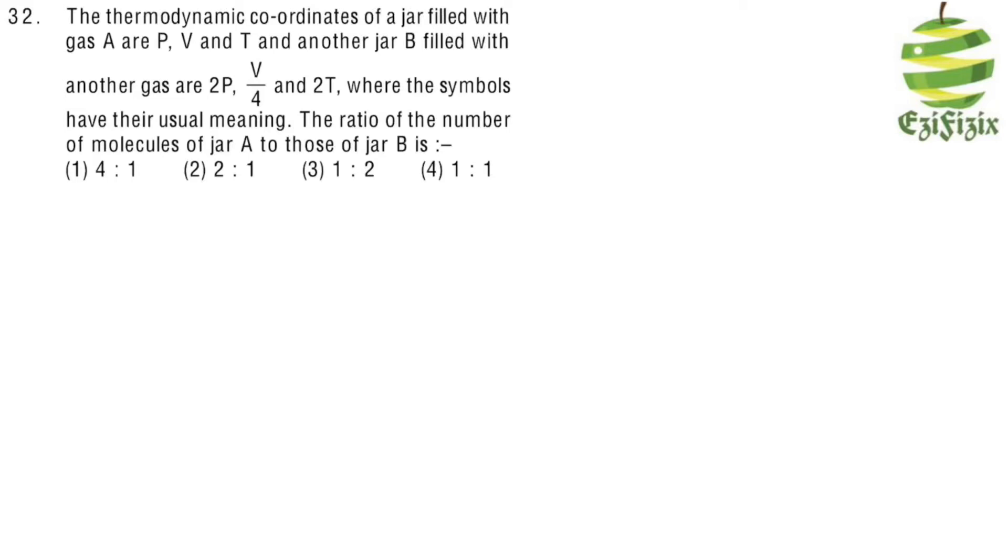Two jars are filled with gas. Jar A has conditions P, V, and T. Another jar B is filled with another gas with conditions 2P, V/4, and 2T, where the symbols have their usual meanings. We need to find the ratio of the number of molecules.